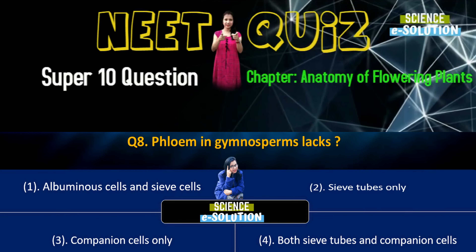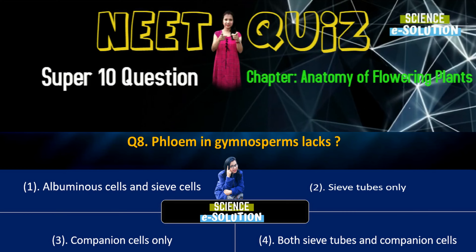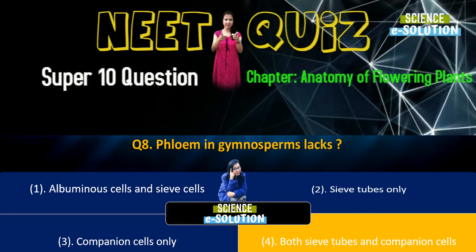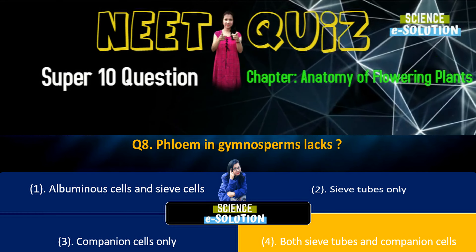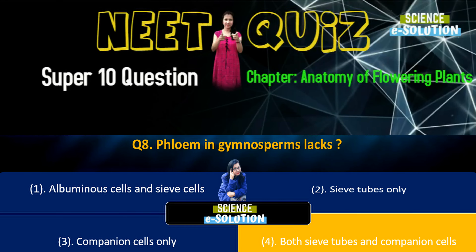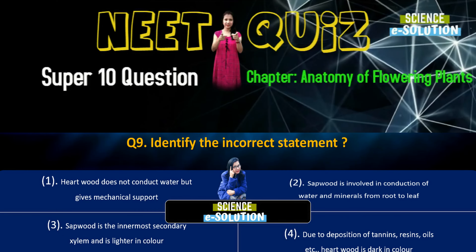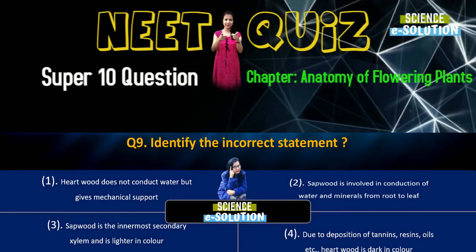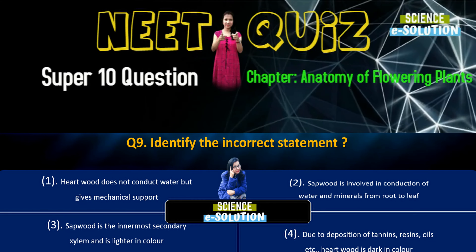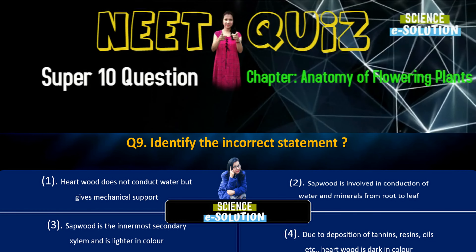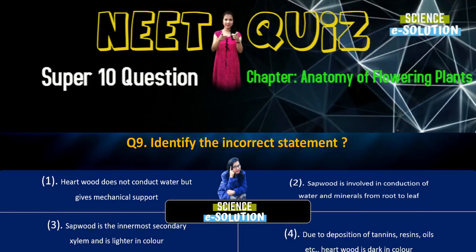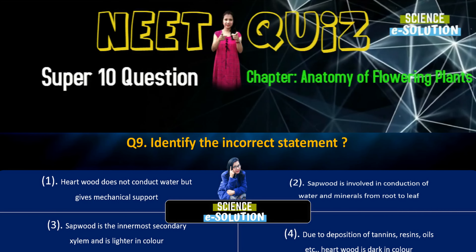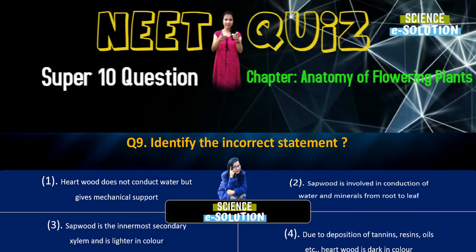Question number five: Casparian strips occur in — epidermis, endodermis, cortex, or pericycle? Casparian strips occur in endodermis. Option number two.